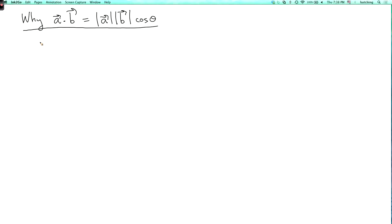I'm now going to explain the geometric interpretation of dot product. That is, a dot b equals the length of a times the length of b times the cosine of theta, where theta is the angle between the two vectors.